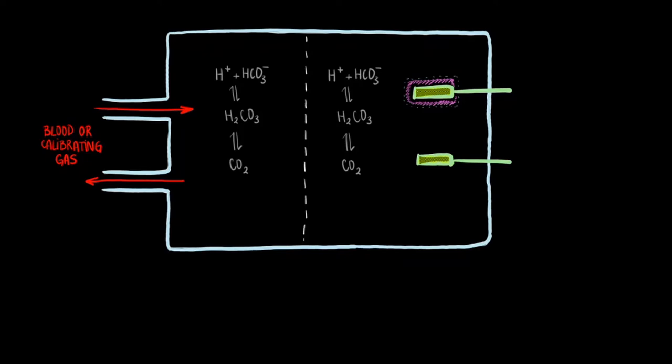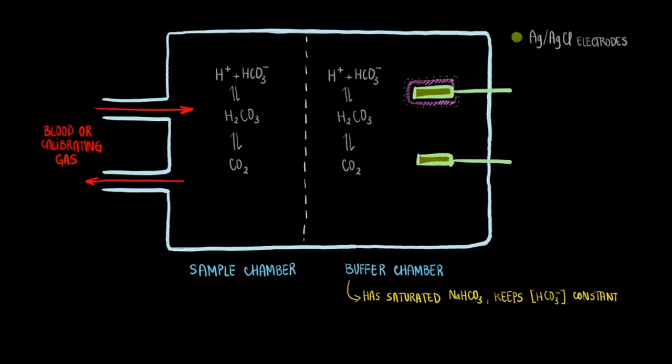The chamber on the left is a sample chamber, while the chamber on the right is the buffer chamber. The buffer chamber is saturated with sodium bicarbonate to keep the concentration of bicarbonate ion constant in the buffer chamber. In the buffer chamber, you can also see two silver/silver chloride electrodes. These electrodes are part of the standard pH electrode embedded in the Severinghaus electrode. So a voltage will be measured between the two electrodes, and this will allow the partial pressure of carbon dioxide to be calculated from a pH or voltage measurement.